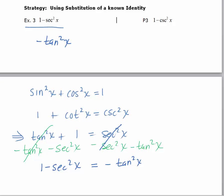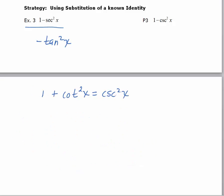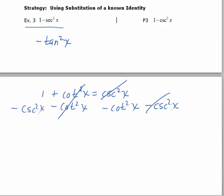For practice problem 3, which has cosecant in it, start with 1 plus cotangent squared x equals cosecant squared. Subtract cotangent squared x and cosecant squared x from each side. The cotangents cancel on the left, the cosecants cancel on the right, leaving 1 minus cosecant squared x equals negative cotangent squared x. So in practice problem 3, replace 1 minus cosecant squared with negative cotangent squared x — one term, no fraction.